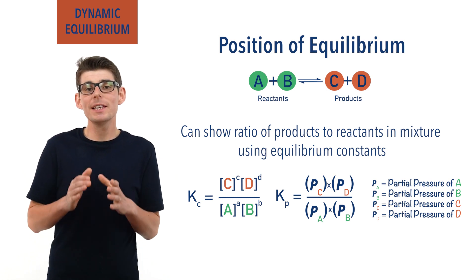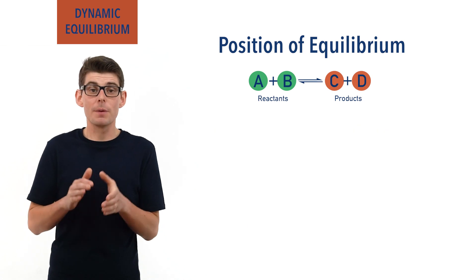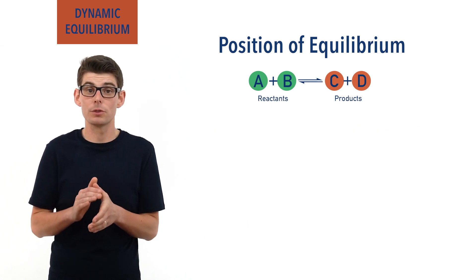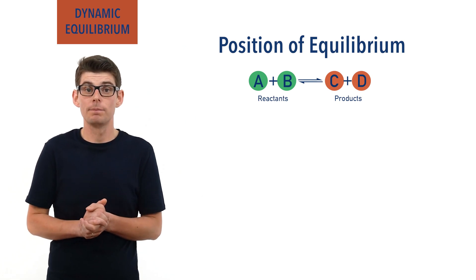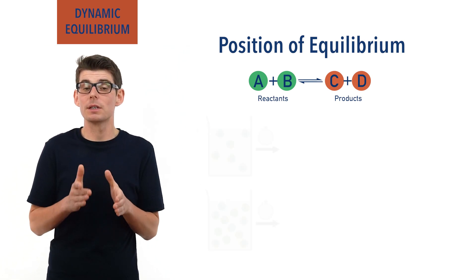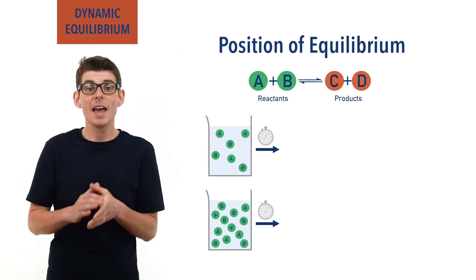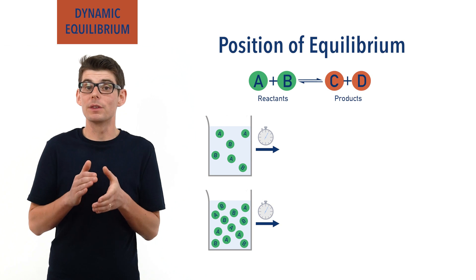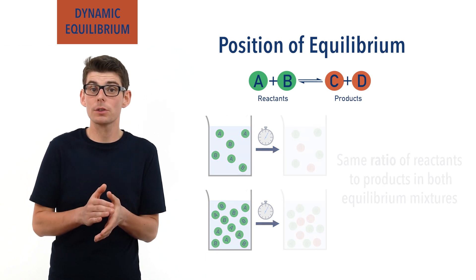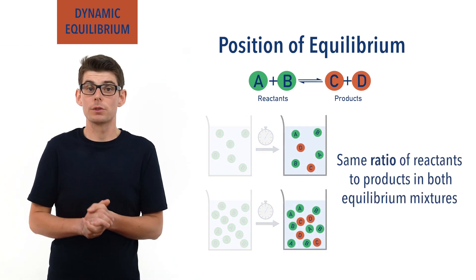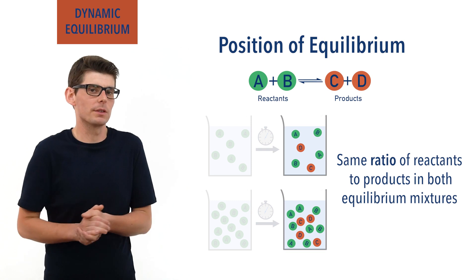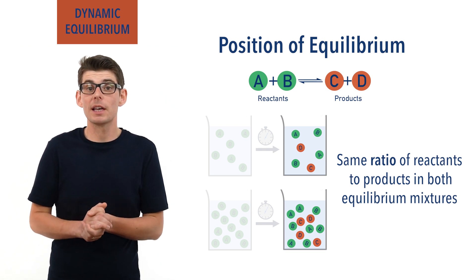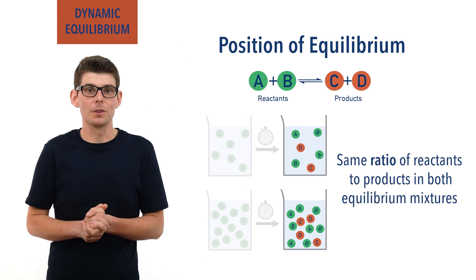It is really important to understand that positions of equilibrium aren't based on the starting concentrations or masses of reactants. Regardless of the starting amounts, after enough time, a particular reaction in a closed system will end up with the same ratio of reacting concentrations to product concentrations, if the conditions are the same. This idea is outlined in more detail in the video on the equilibrium constant Kc.